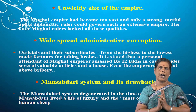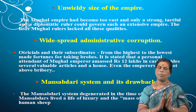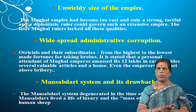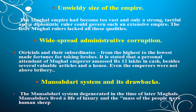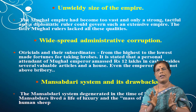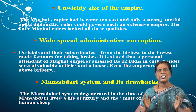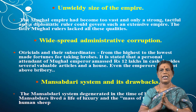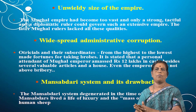The Mansabdari system and its drawbacks: this system was introduced by Akbar and worked well during his time, but it degenerated under the later Mughals. The Mansabdars lived a life of luxury, while the mass of the people were treated as human sheep — a large group of soldiers under them with no real allegiance to the empire.